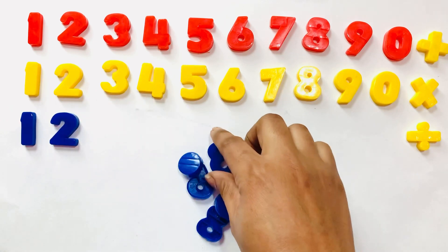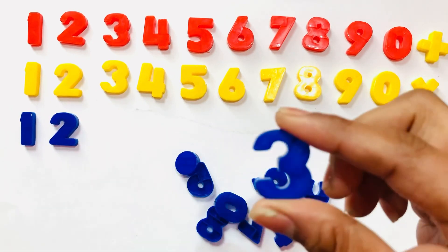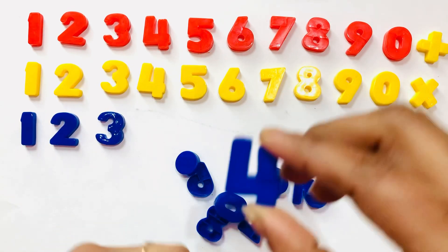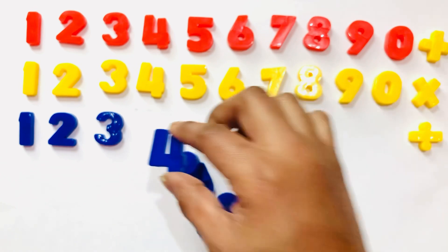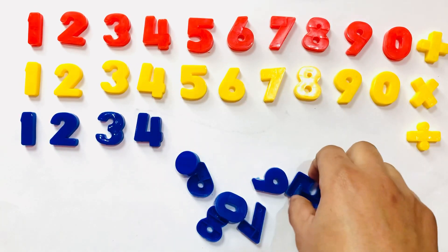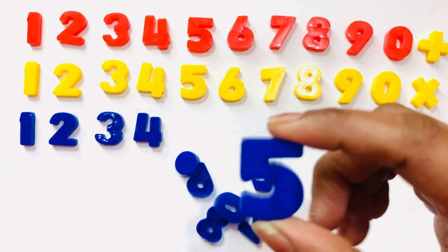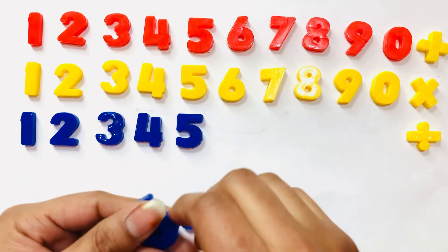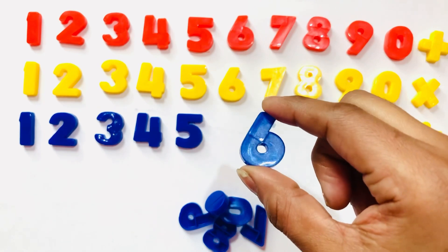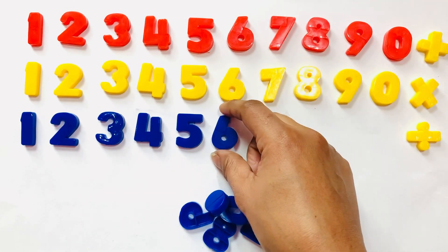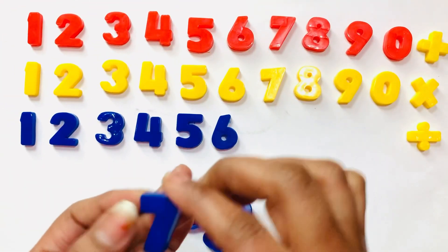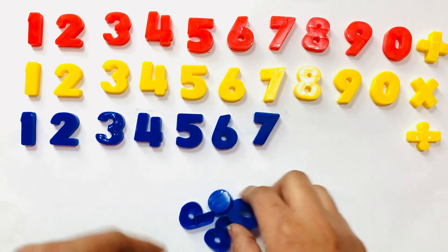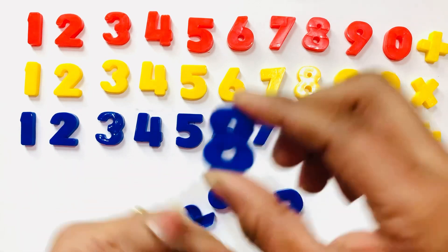Number two, then I pick number three, next number is number four, next number is number five. Now I pick number six, then I choose next number, number seven. Next number is number eight.